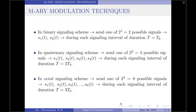To start with, in a binary signaling scheme we will send 1 of 2^1, which equals 2 possible signals. Let them be represented by s1(t) and s2(t), and this is done during each signaling interval of duration T = 1·Tb. Note that the power of 2 here will be the value of the integer — so for binary signaling, 2^1 = 2 possible signals, each of duration 1·Tb.